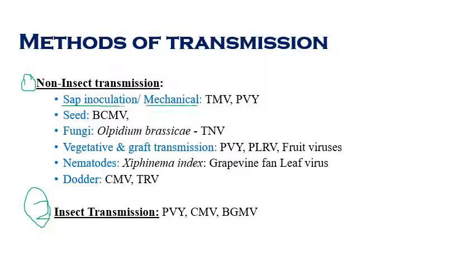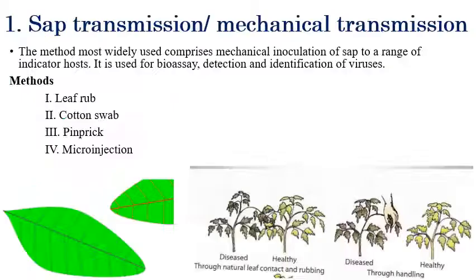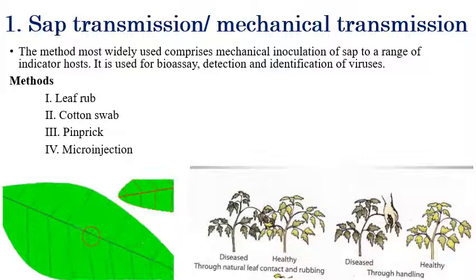Non-insect transmission includes: sap inoculation or mechanical transmission, transmission by seeds, by fungi, by vegetative or graft transmission, and by nematodes. These are the different types of non-insect transmissions involved in the transmission of plant viruses. Insect transmission involves different types of insects such as aphids, leafhoppers, mealybugs, and other insects involved in plant virus transmission.